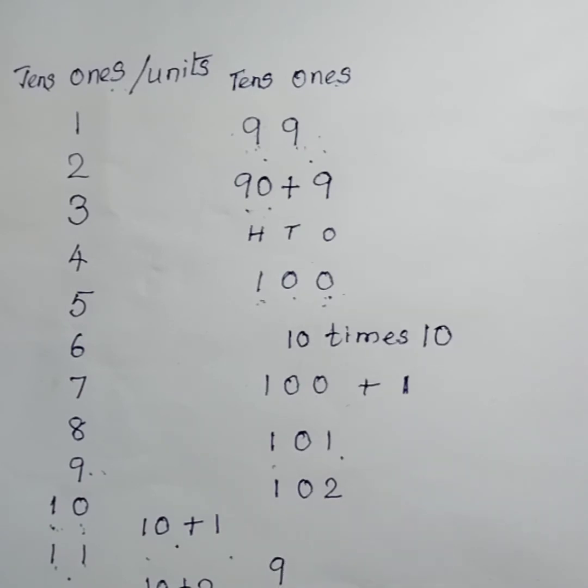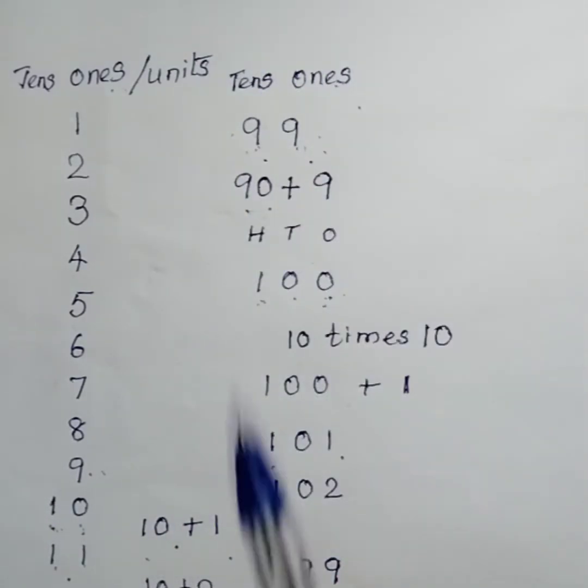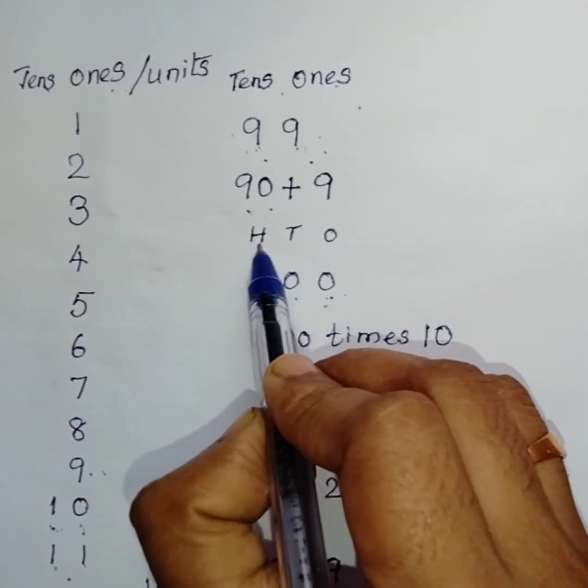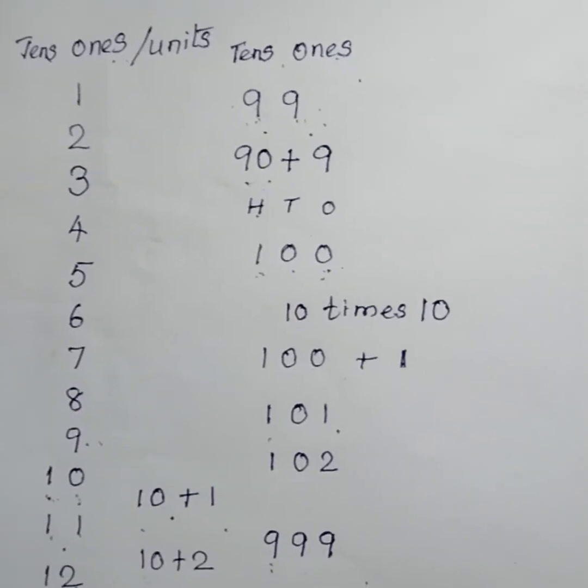999. 999 is the last 3 digit number, also the largest 3 digit number. Now, you can see 9 in the ones place and the next 9 in the tens place and the last 9 in the hundreds place. So, 900 plus 90 plus 9.